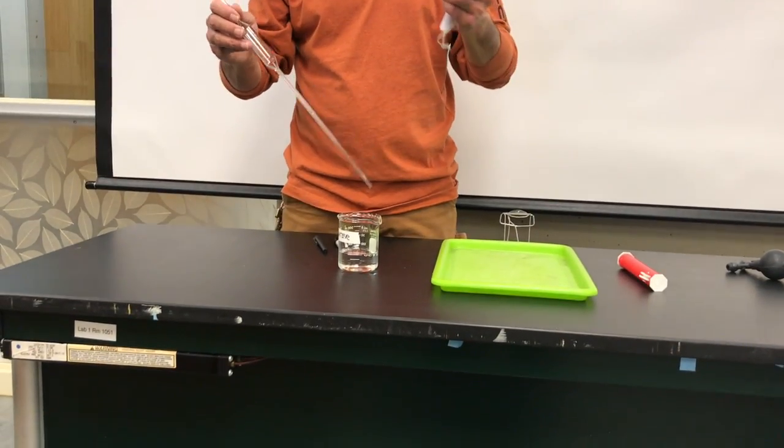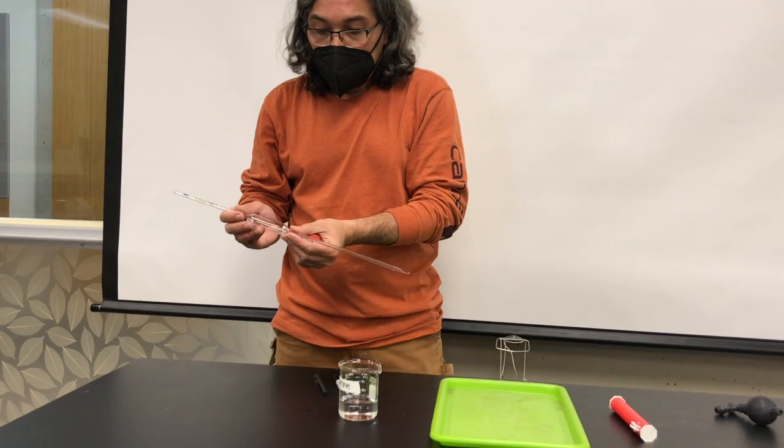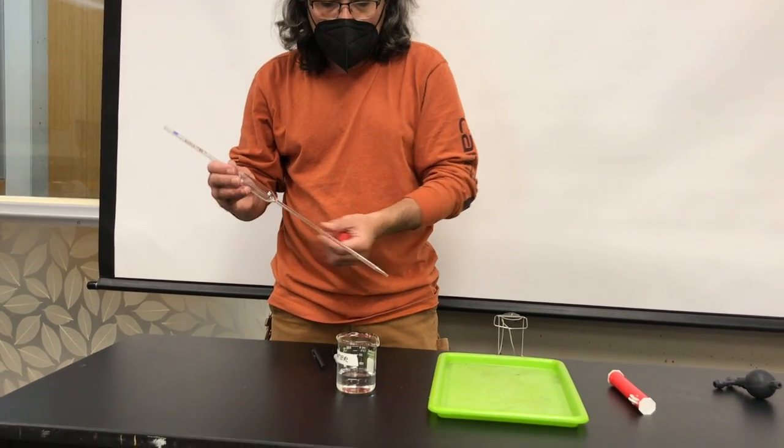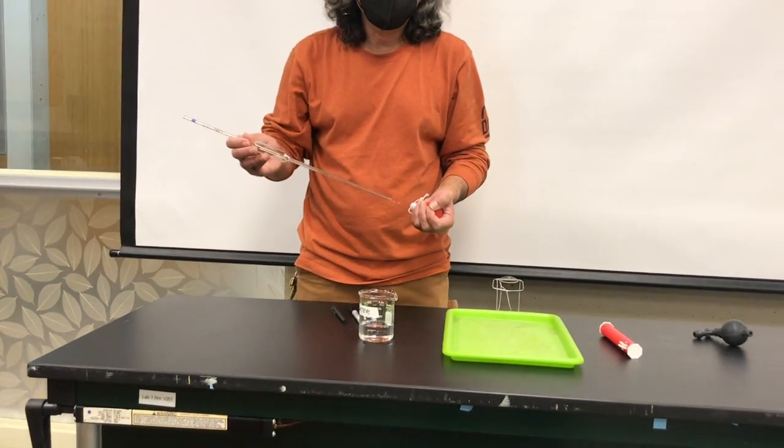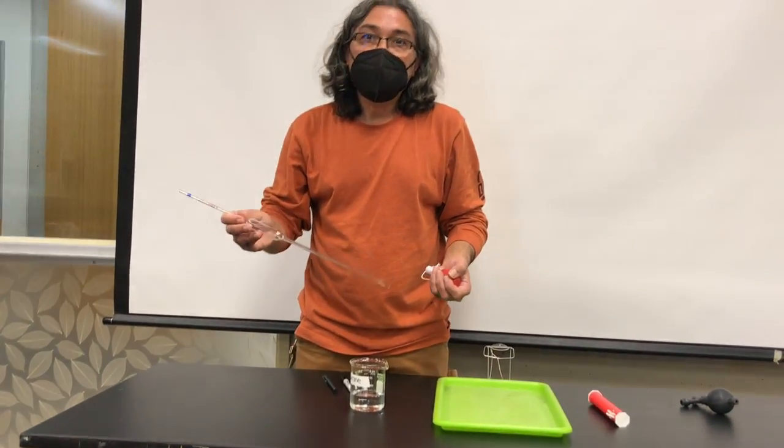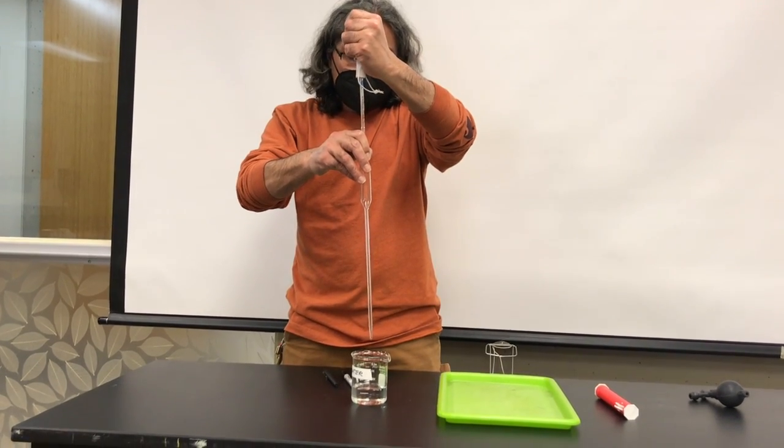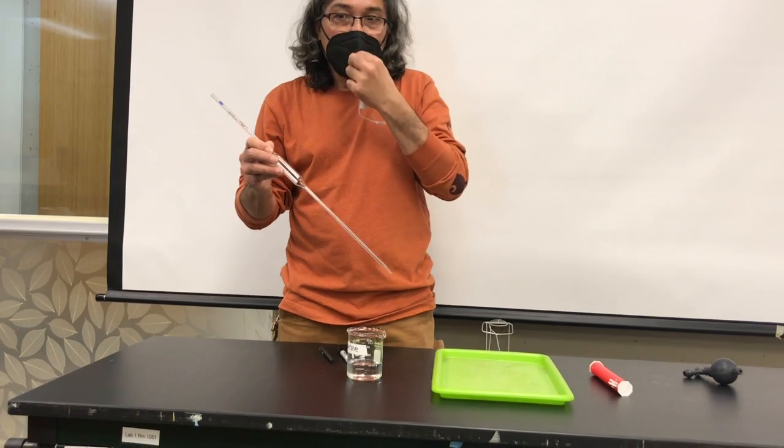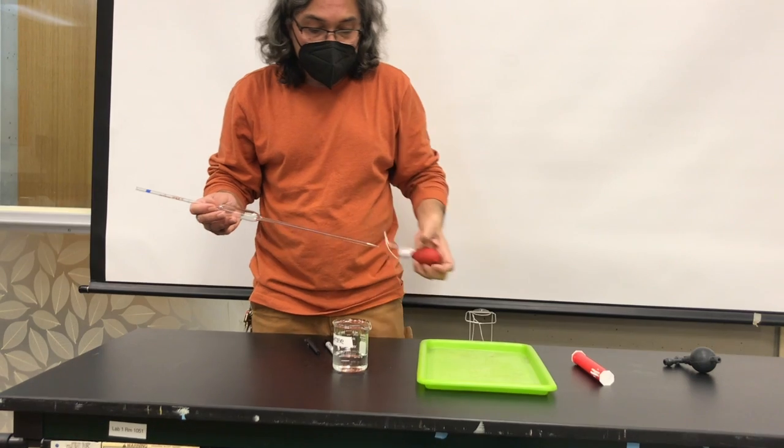This is why you don't want to blow the liquid out of the volumetric pipette, because if you did that, then you will end up with a little bit more than the 25 mls that you want. So if I went and did this to try to get all the liquid out, I will actually end up with a little bit more liquid than 25 mls.